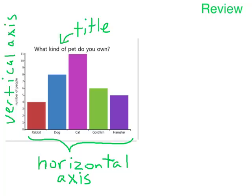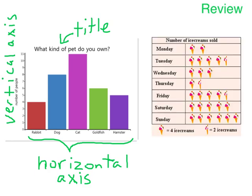So to review: we have a bar graph with a title on top, a horizontal axis with different pieces of information, and the vertical axis on the side usually has numbers — in this example, the numbers tell us the number of people. And here we have a pictograph that uses pictures instead of bars. It's important to look at the legend to know how many it represents — in this case, we count by fours, and remember that half an ice cream equals two ice creams. That is how you read bar graphs and pictographs. Have fun analyzing your own graphs.